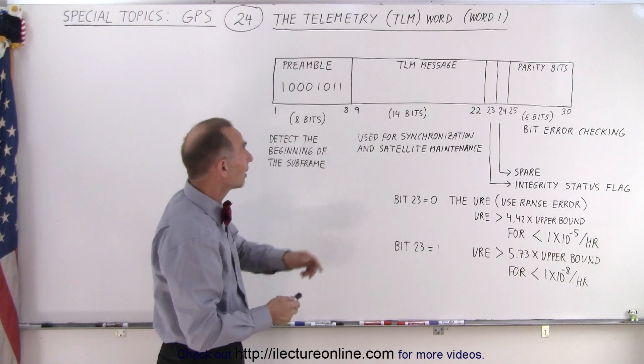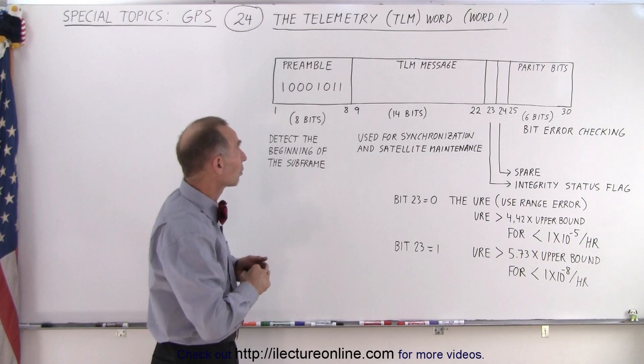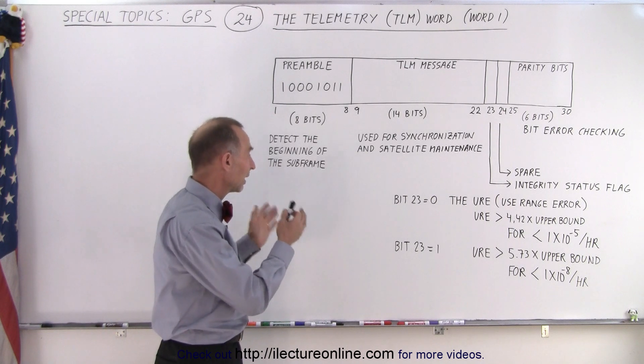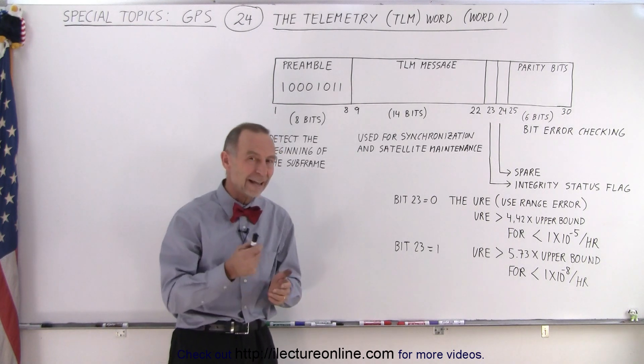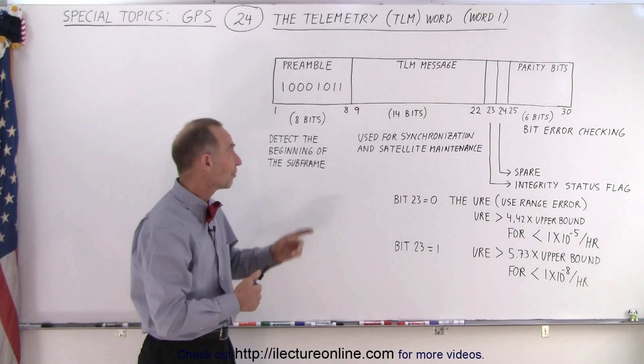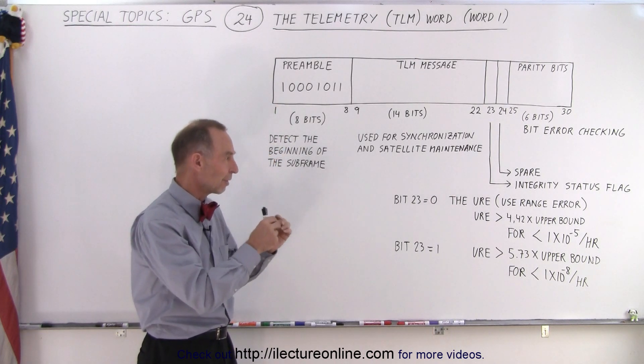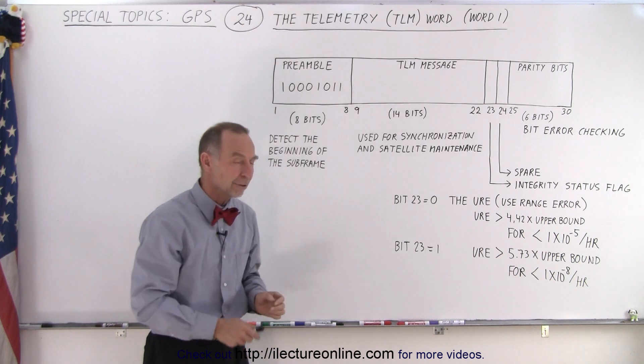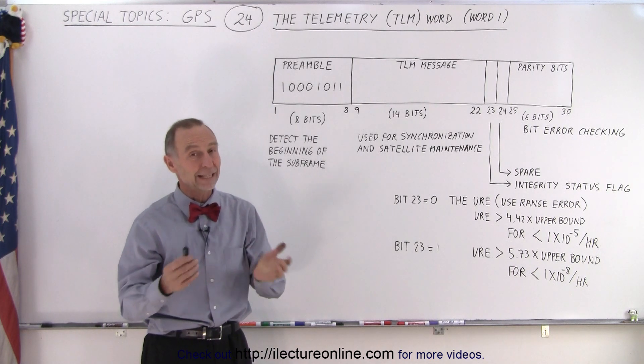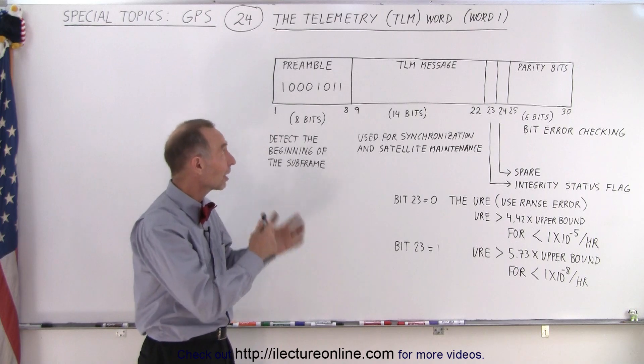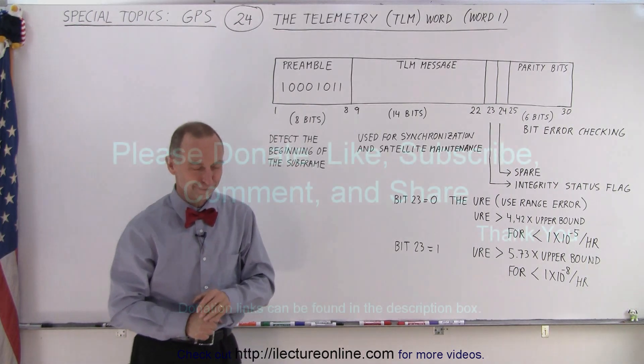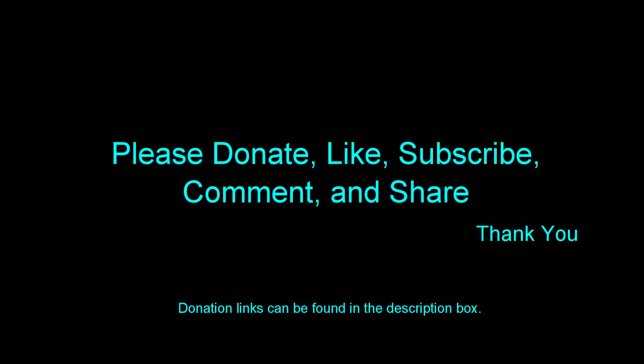So that's the content of word one, what we call the telemetry word. And again, this word will exist in every one of the subframes up front. It comes out with preamble bits so the receiver can zero in saying that's the first transmission of the new subframe, and then it can look for the message that comes after that. And that's how we know what the contents are for word one. All right, thank you.